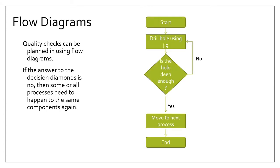This whole process can be built in using flow diagrams. There are three main symbols: you always start with a start and end with an end, both in an oval shape. Then you have actions, which happen in squares. So in this instance you start the job — oval, start — and then the action is 'drill a hole using a jig.' That's the action that's done.